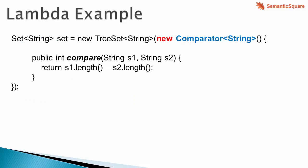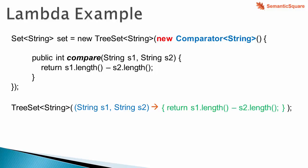Here is the example from our discussion of anonymous classes. An instance of an anonymous class is being passed as a comparator to the constructor of TreeSet. Now let's see how we can replace the anonymous class with a lambda expression. The goal of our lambda expression is to provide the logic for the compare method. The lambda expression starts with the two method parameters of the compare method, next the arrow symbol, and after that simply the body — which is identical to the body in the compare method.